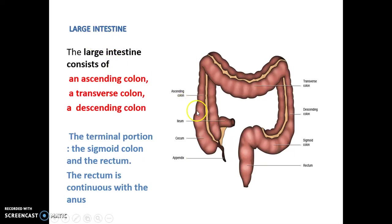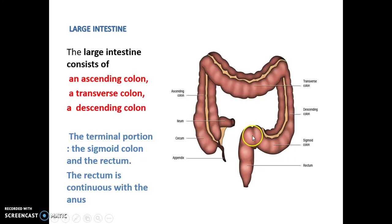The large intestine consists of the cecum, ascending colon, transverse colon, descending colon, sigmoid colon, and rectum. The rectum continues with the anus. So in order: ascending colon, transverse colon, descending colon, sigmoid colon, rectum, and anus.